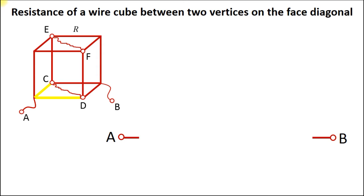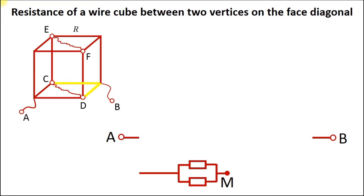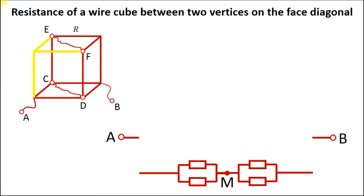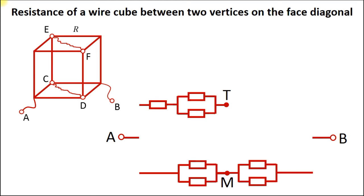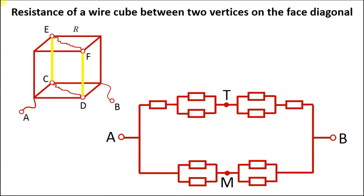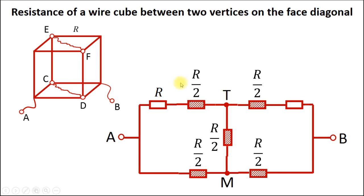These two edges starting at point A end at a common point — we call it point M. These two edges start at point M and go to point B. This construction consists of one resistor in series with a construction of two resistors in parallel ending at a point T. Due to symmetry, we have the same construction on the opposite side of the cube. These two edges starting at point M and ending at point T are in parallel. The resistance of all segments with two resistors in parallel is R over 2, and with two resistors in series the total resistance of each symmetric segment is 3R over 2.